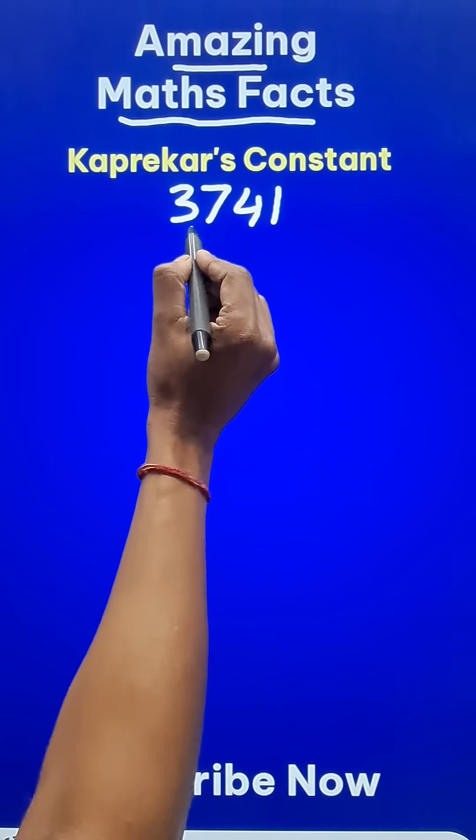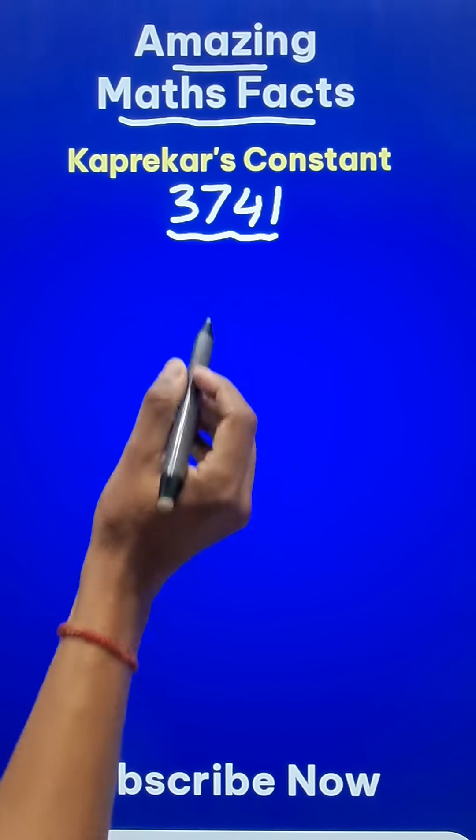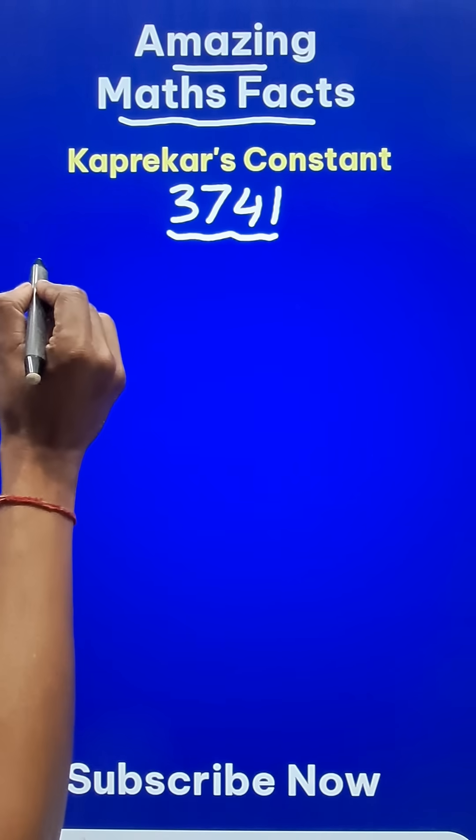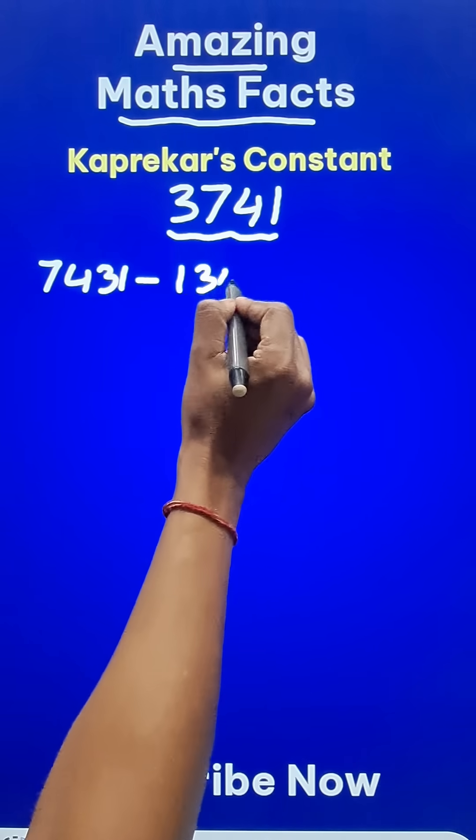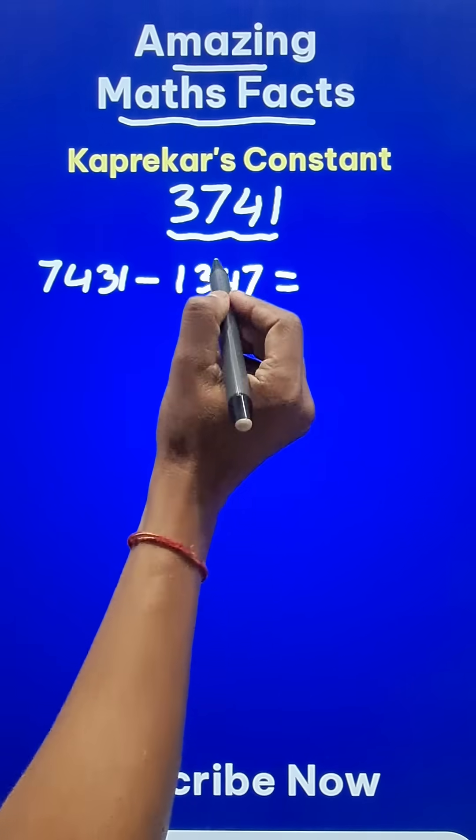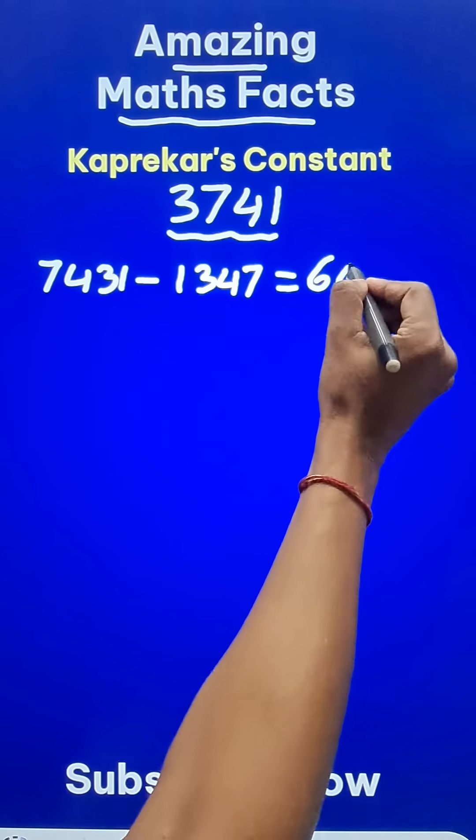Now make the highest number, that is the largest number, that can be formed out of these four digits, which is 7431, and subtract the lowest number formed, 1347, from this. And you will see that the result is 6084.